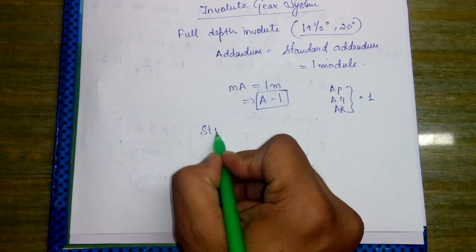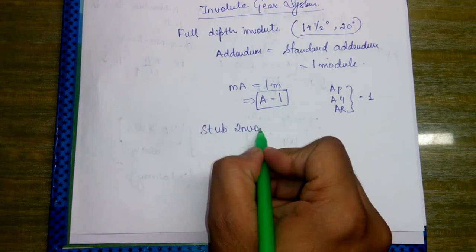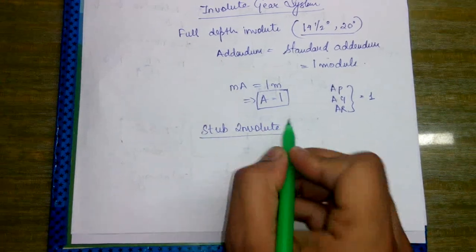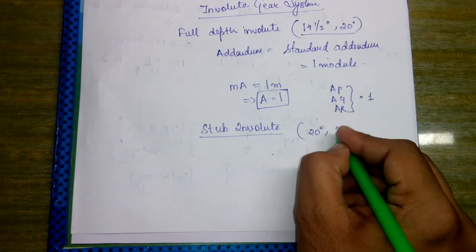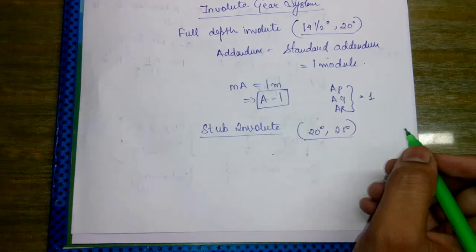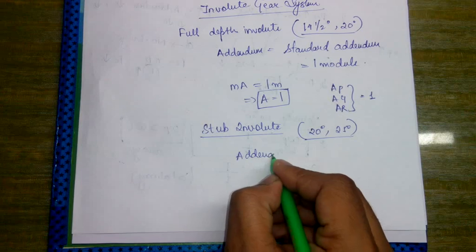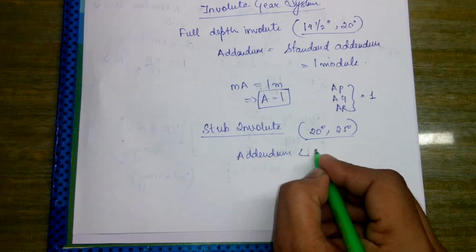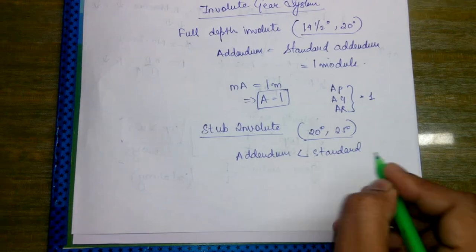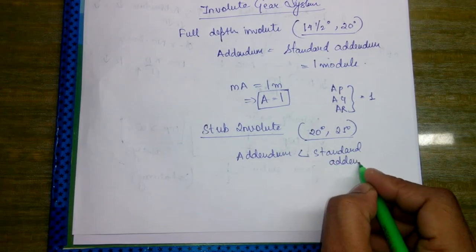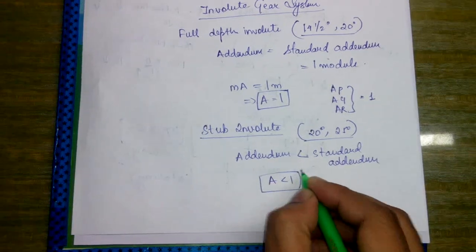Now we come to stub involute. Stub involute generally has either 20 degree or 25 degree pressure angle. Here the addendum is less than the standard addendum, so we get A less than one.